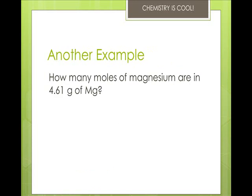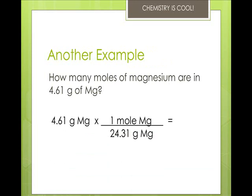So how many moles of magnesium are in 4.61 grams? Well, we take what we know, and we multiply it times the molar ratio, and we get 0.190 moles of magnesium.